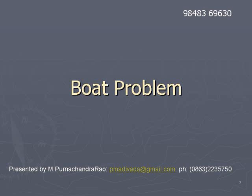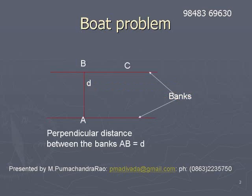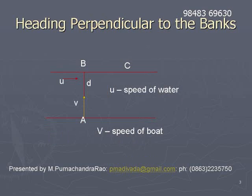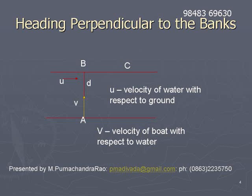Boat problem. Let us take the two horizontal parallel red lines as the banks of a river. Then small d, the perpendicular, is the width of the river. Here we are representing u and v as the speeds of a boat. u is the speed of water and v is the speed of boat. u is equal to the velocity of water with respect to earth, and v represents the velocity of boat with respect to water.